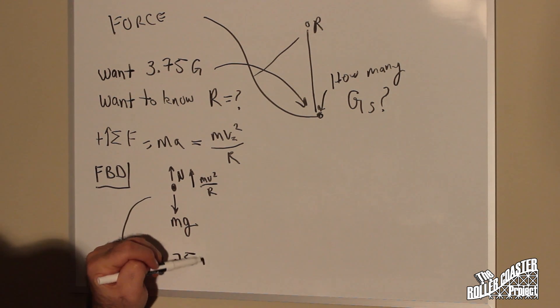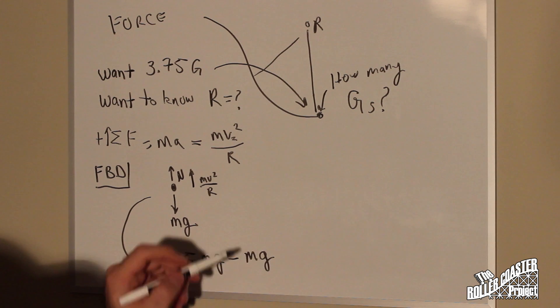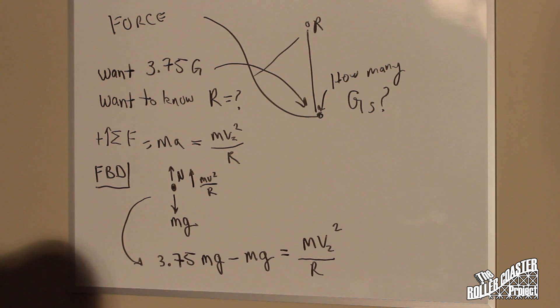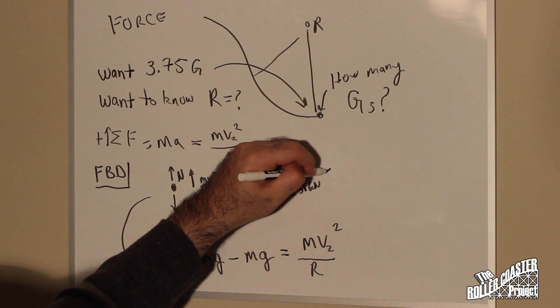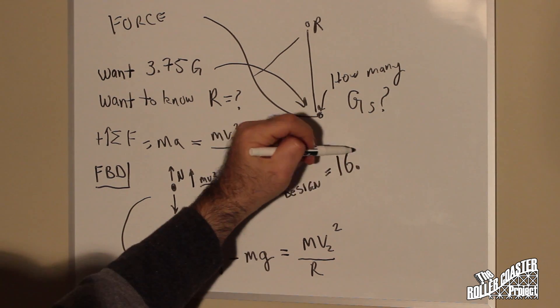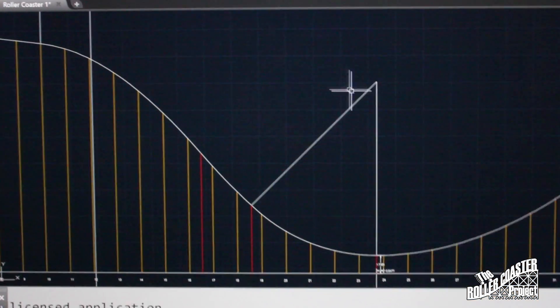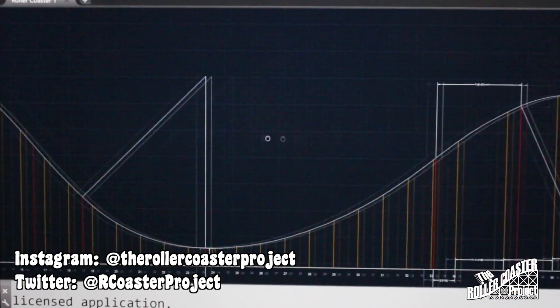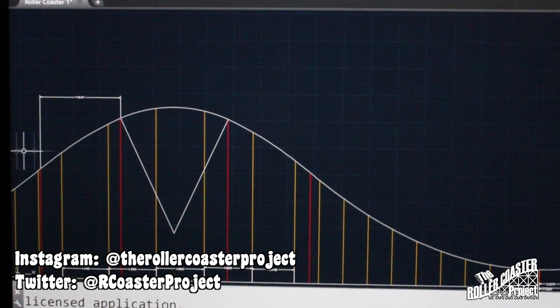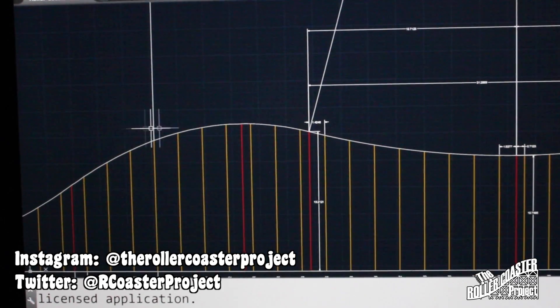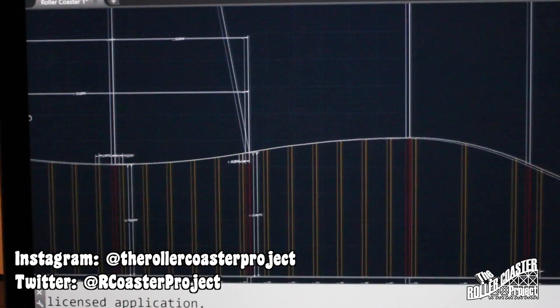So solving this equation for R, since we had our velocity from the last equation, our radius design value is 16.983. Knowing how to calculate the velocities and forces at each point along the ride can help us design it. And then we'll use a modeling program such as AutoCAD or any CAD program to draw it out.